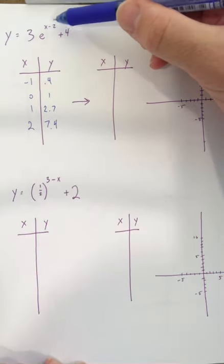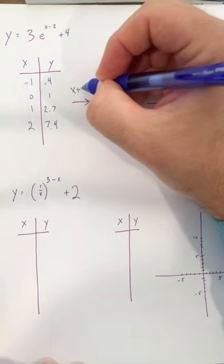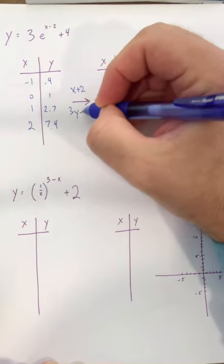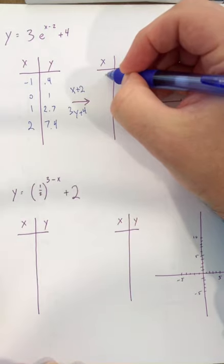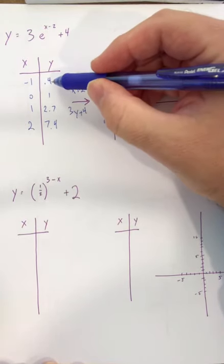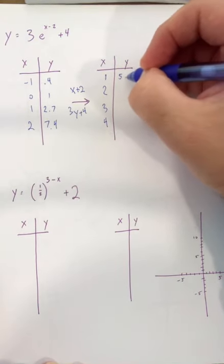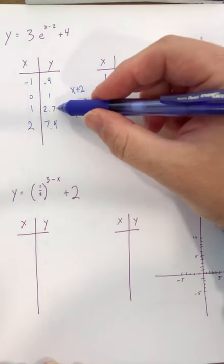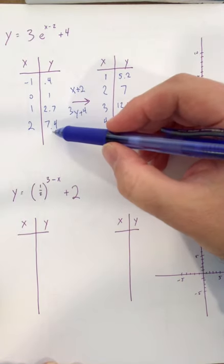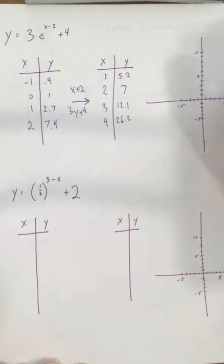So thinking about shifts, horizontal shifts, things that directly impact the x, that's that x there, always goes in the opposite. So we're going to add 2 to all our x values. The 3 here plus 4, those both impact the y. So it's 3y plus 4. So if we add 2 to all the x values, we have 1, 2, 3, 4. Multiply the y values by 3 and add 4. You know, just might take a calculator, and you'll be allowed to calculate it here. So we get 1.2 plus 4 is 5.2. 3 plus 4 is 7. 2.7 would be 8.1, 12.1. 3 times 7.4 would be 22.2, I think, plus 4 is 26.2.